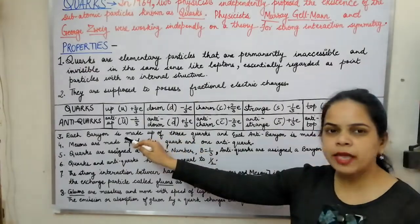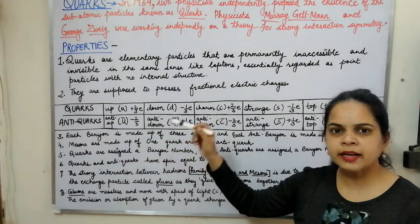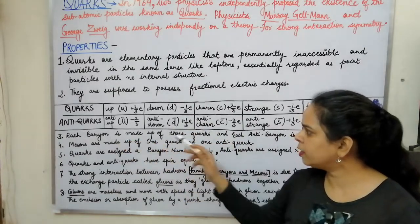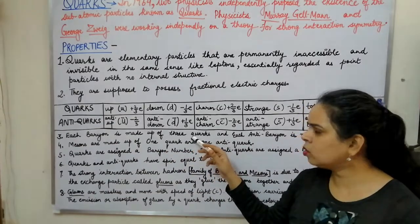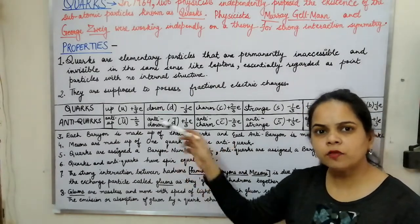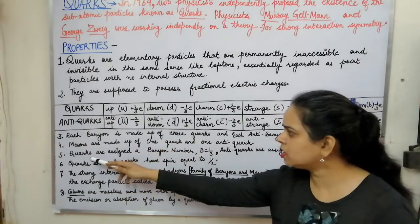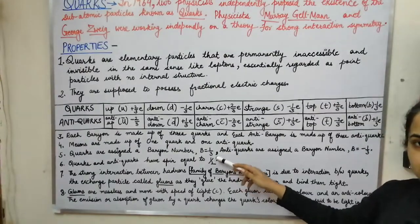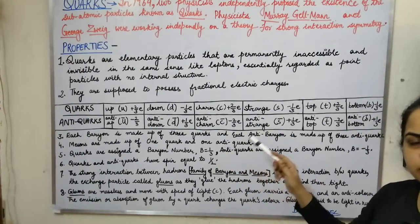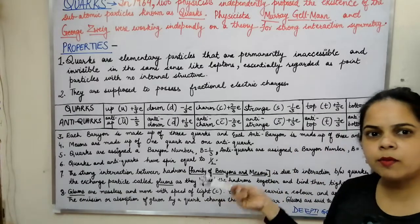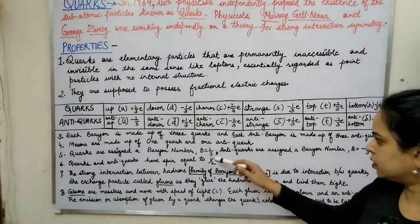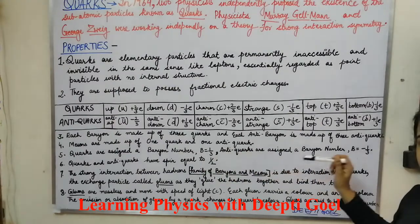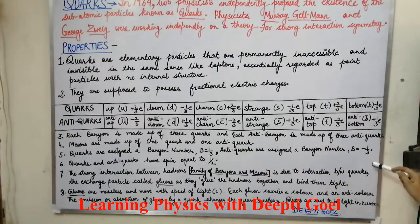Since we assign a baryon number to baryon particles, anti-baryons have baryon number minus 1. Since 1 baryon is made up of 3 quarks, 1 quark will have a baryon number of 1/3. So quarks are assigned a baryon number of B = 1/3, and the baryon number for the anti-quark is minus 1/3.